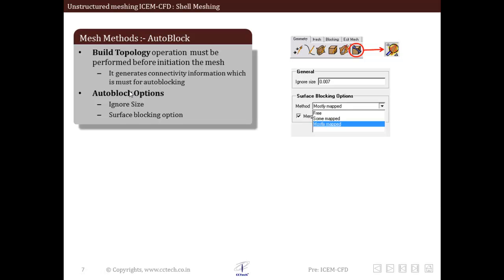Auto block has some options to control the mesh. First general option is ignore sides. This is used to ignore sliver surfaces. If sliver surfaces are meshed, it will result in skewed elements reducing the quality of mesh. So this option merges the sliver surface patches with adjacent surface patches, improving mesh quality.